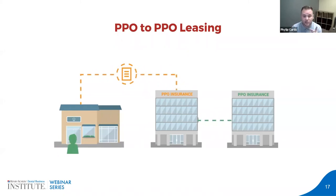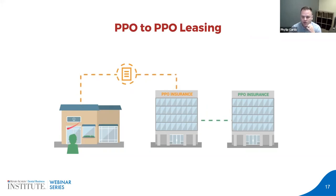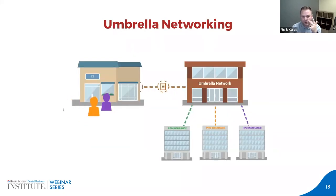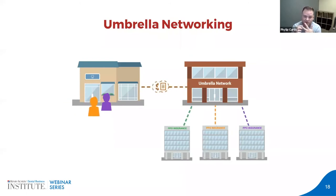Hopefully this is making sense. In an ideal world you would truly understand the participation for each of your current doctors before credentialing. The third type of participation involves umbrella network companies — also known as third-party administrators. These are companies like Connection, Dentimax, Zelis, Careington, Maverest, Premier Dental Group, or First Dental Health. They don't really have patients of their own — rather, they're aggregators that have created relationships with a ton of insurance companies underneath them.